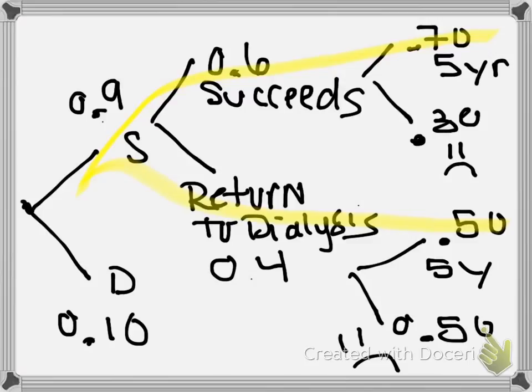What you need to do now is you need to take each branch and multiply them together. It's a sequence of events. Survival and, key word, succeeds, and five year. Multiply that branch together or add survives transplant and returns to dialysis and survives five years. Multiply that branch together.